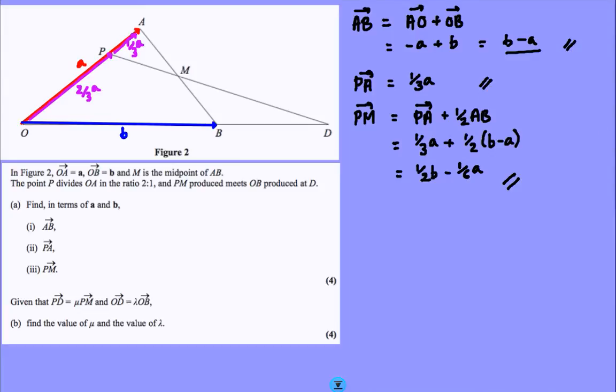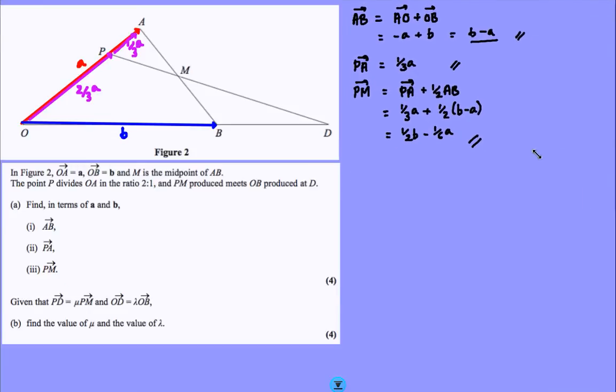Now, the second part of the question. Slightly more awkward, this. And I think what we've got in the second part of the question is we've got to compare journeys. This is the trick with this one. So part B. It gives me P to D and O to D in terms of lambda and mu.